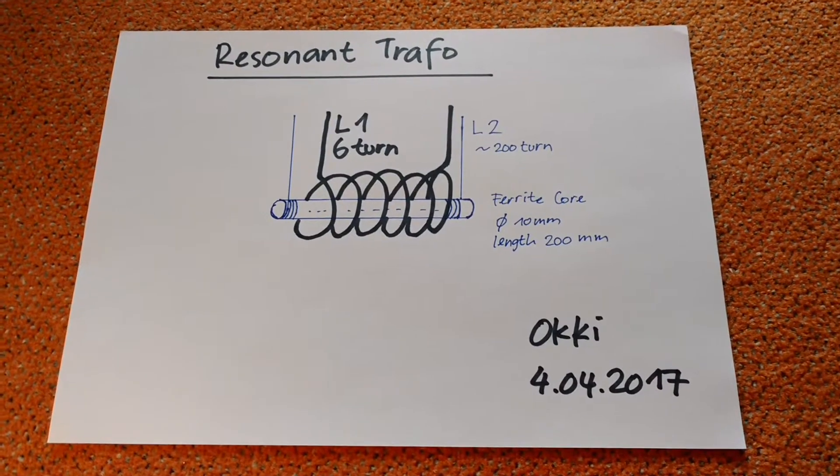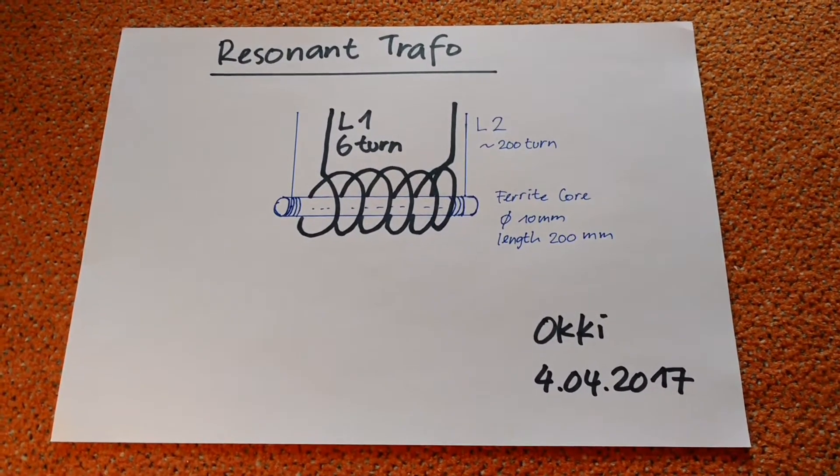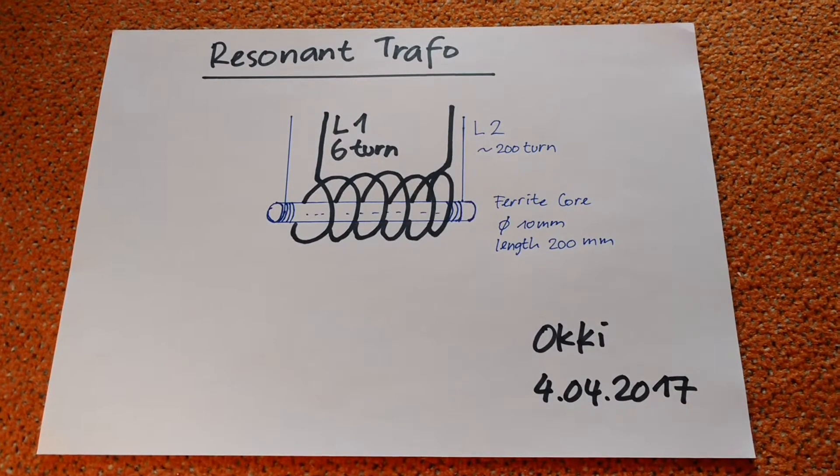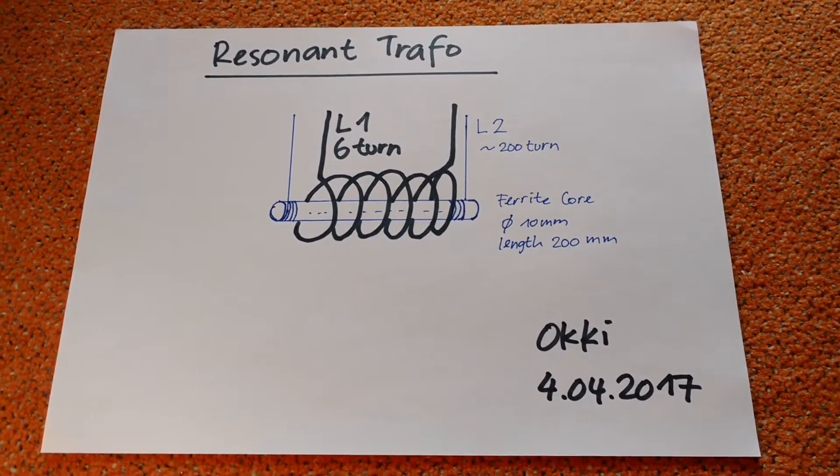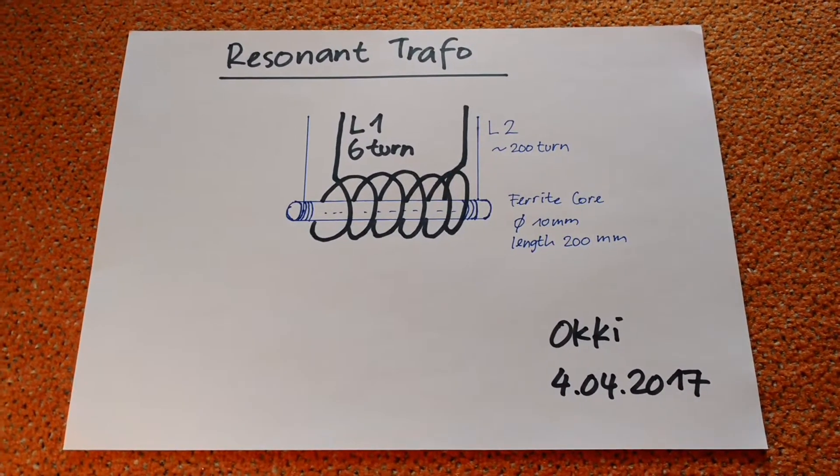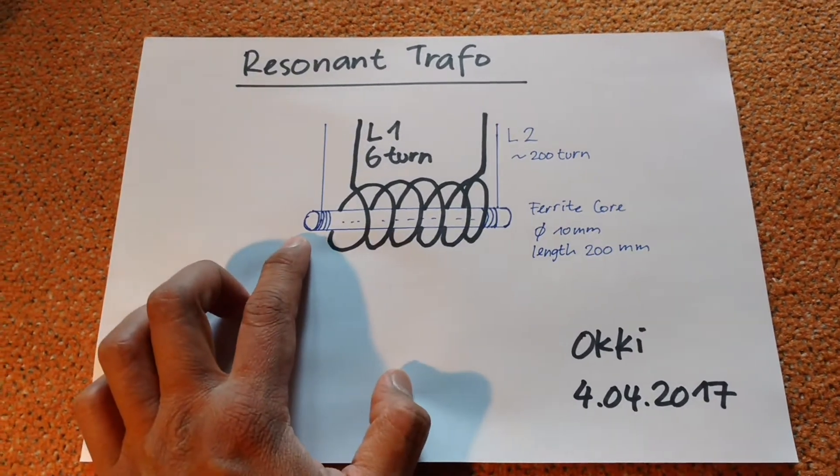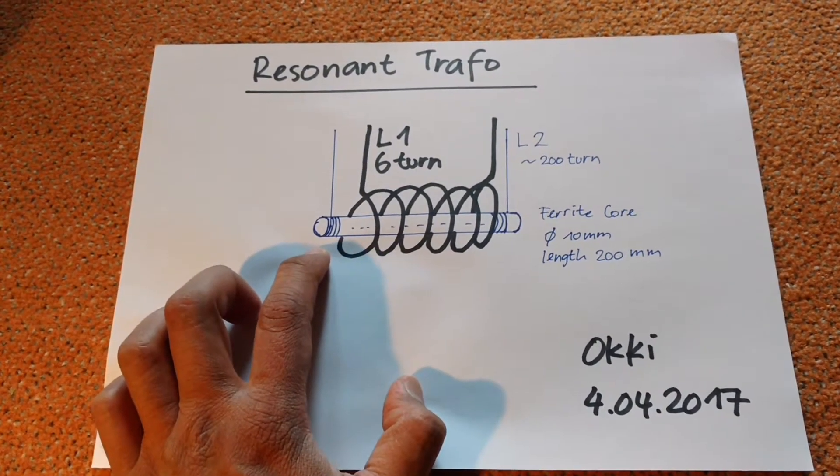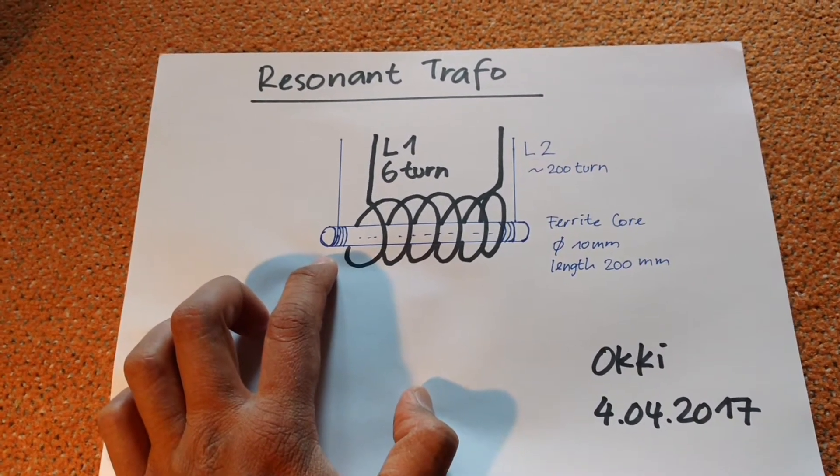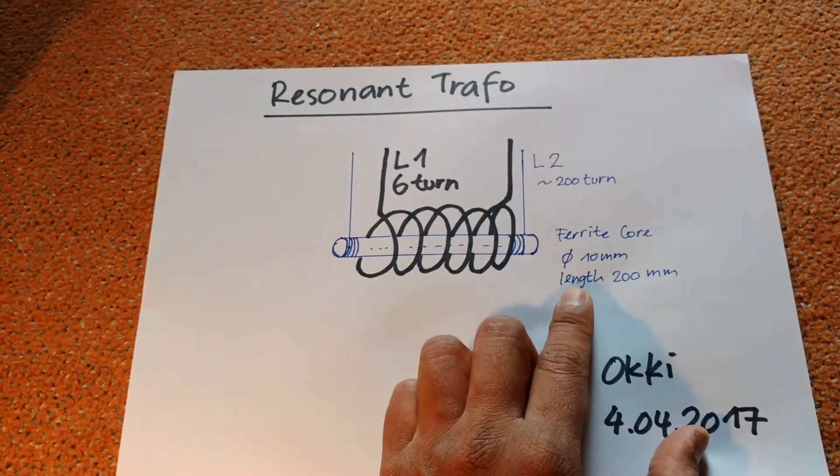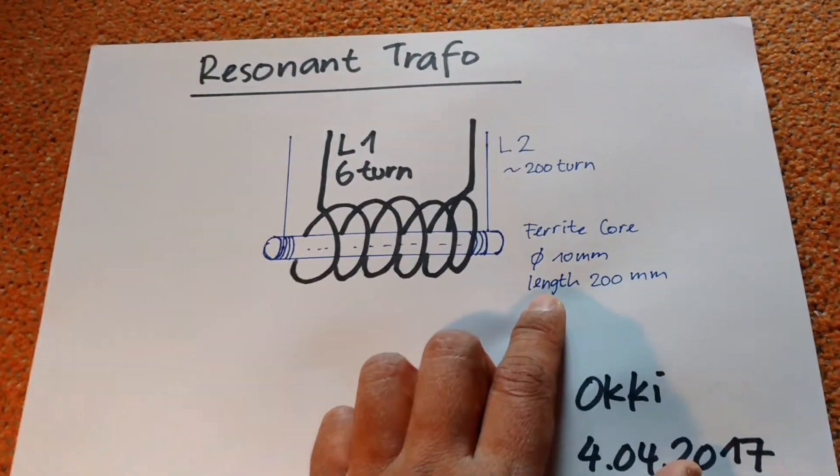Hi, today I want to show you how I built my resonant transformer. The components are ferrite core. I have 10 millimeter diameter ferrite core with 200 millimeter length.